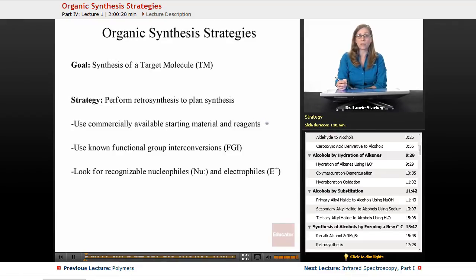The goal is to use commercially available starting materials, so we want to keep working backwards to get simpler and simpler starting materials until finally we have something that we know we can acquire commercially, hopefully inexpensively. We're going to use known functional group interconversions - reductions, oxidations, eliminations, substitutions, the kinds of reactions we've seen. And when we do our retrosynthesis and disconnections, what we're going to be looking for are recognizable nucleophiles and electrophiles - nucleophiles, the electron donors; electrophiles, the electron acceptors.